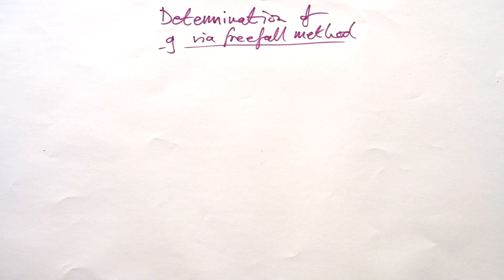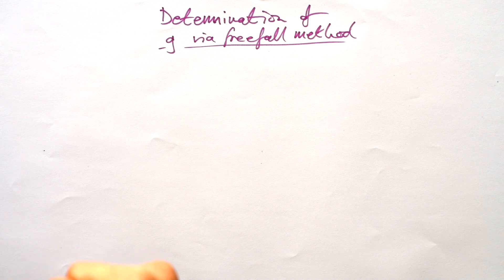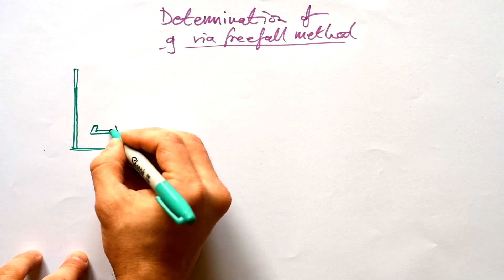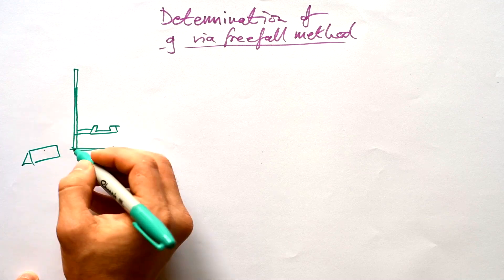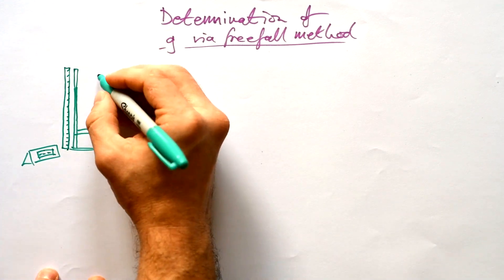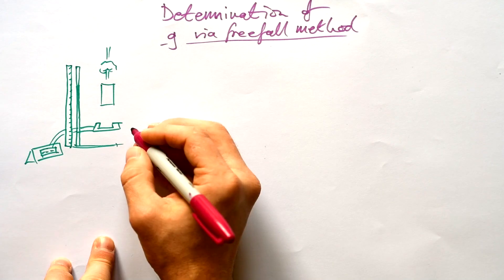Here's required practical determination of g, gravitational field strength, or acceleration due to gravity, also has another name, via freefall method. So we're trying to find g. All we're going to do is drop a piece of card through a light gate.